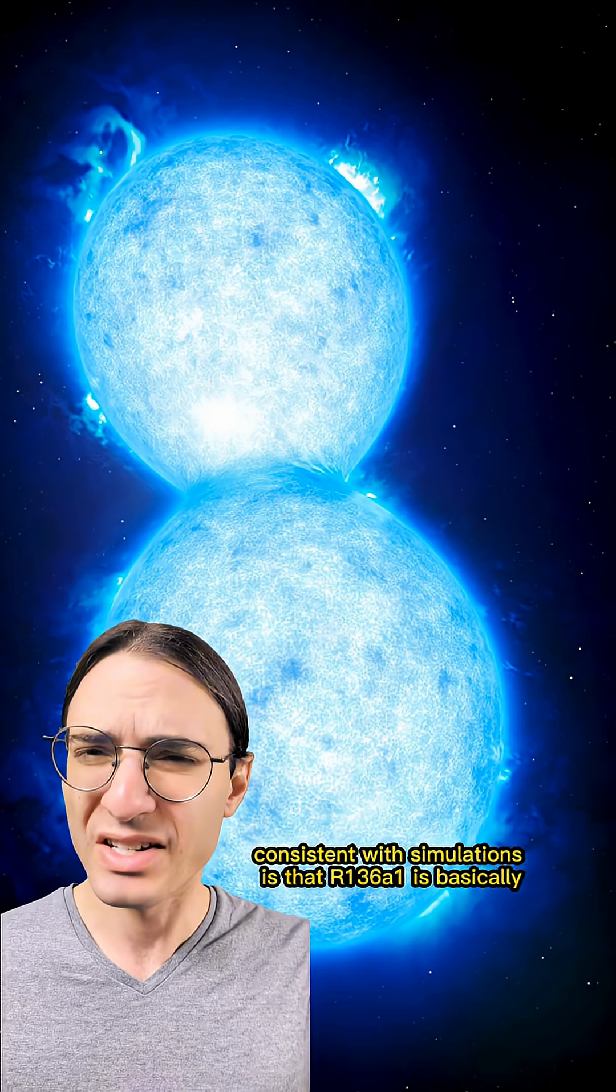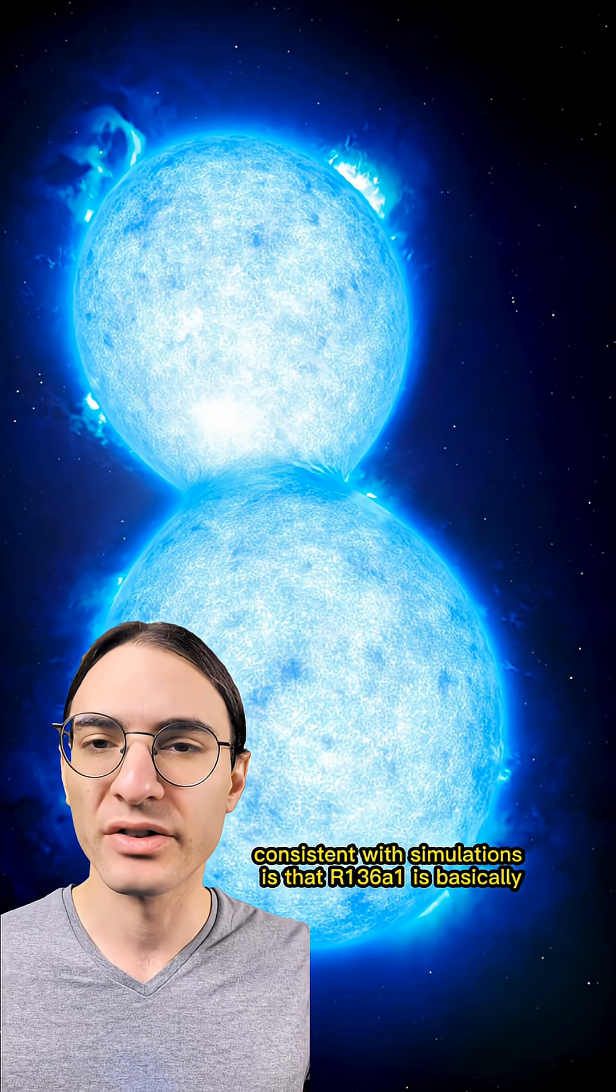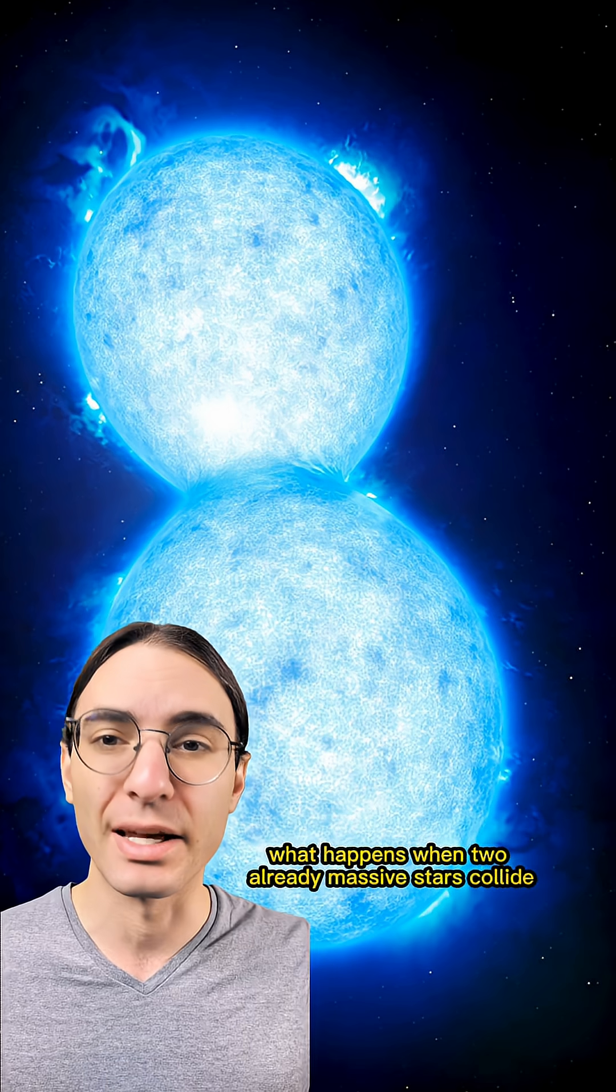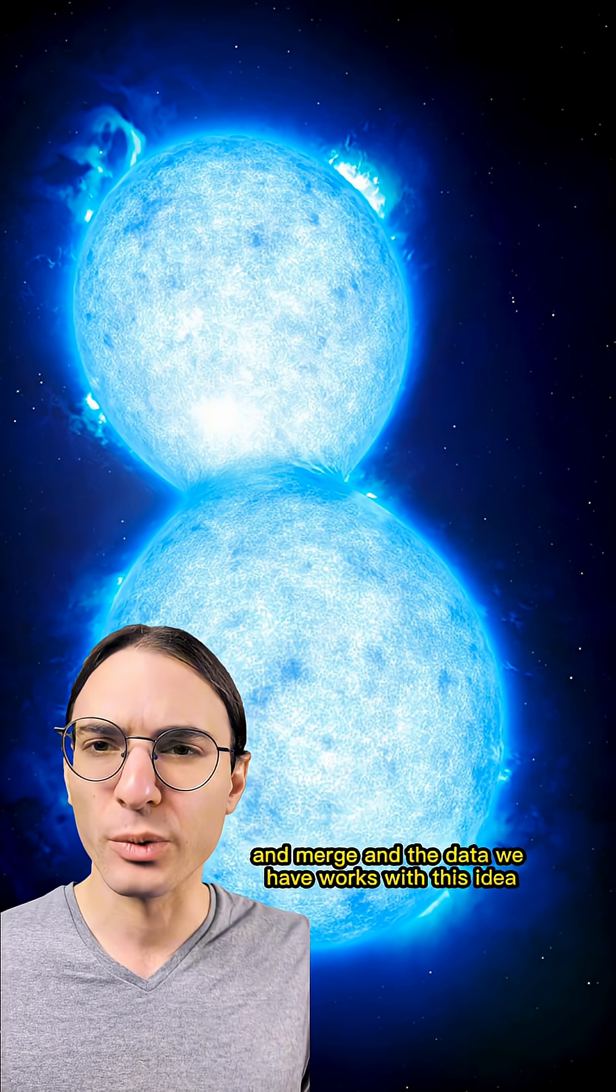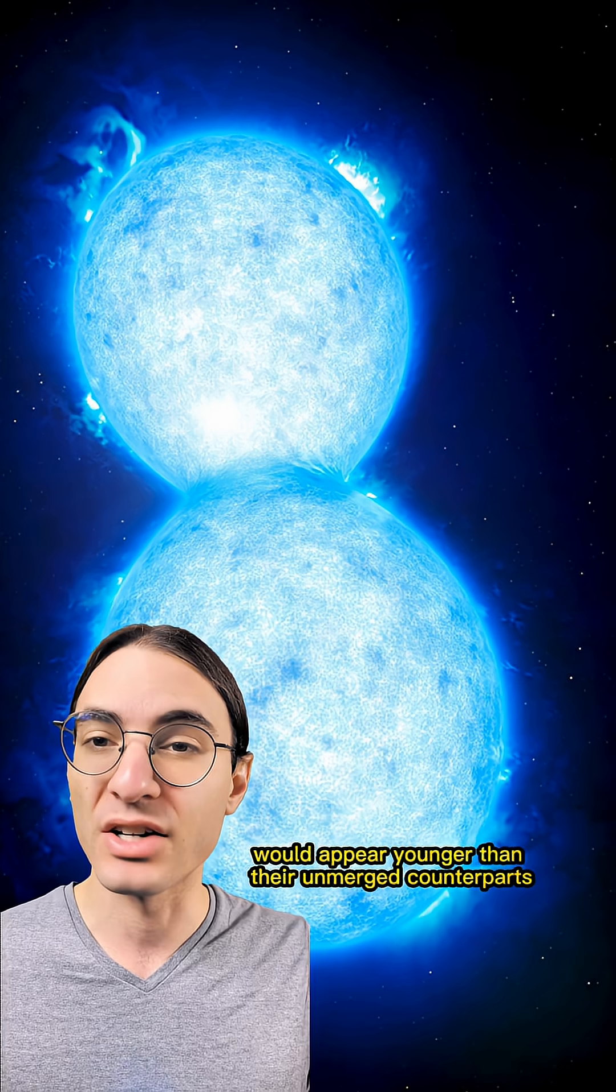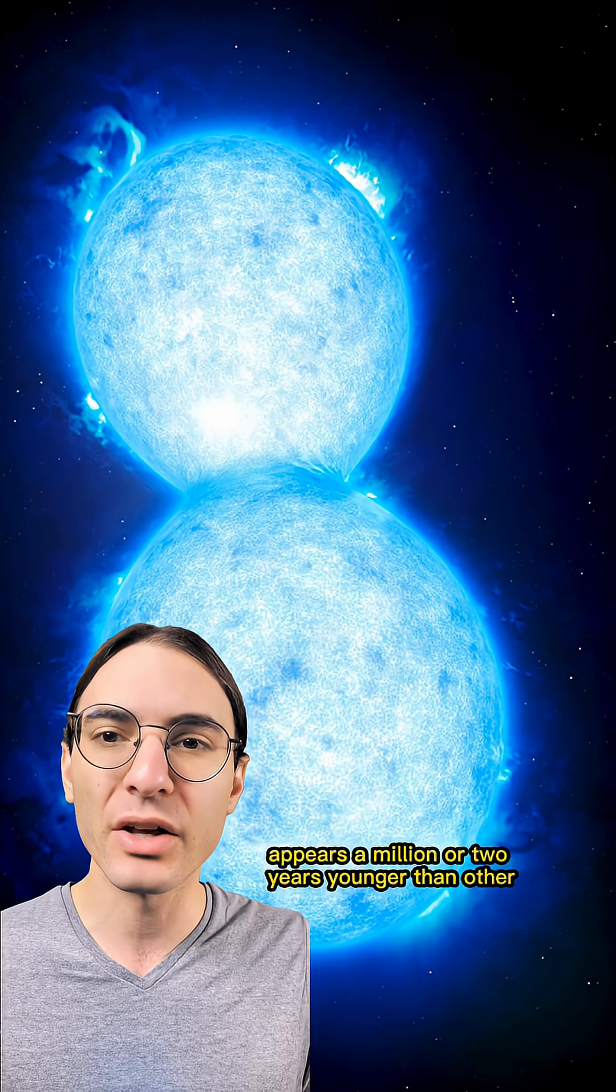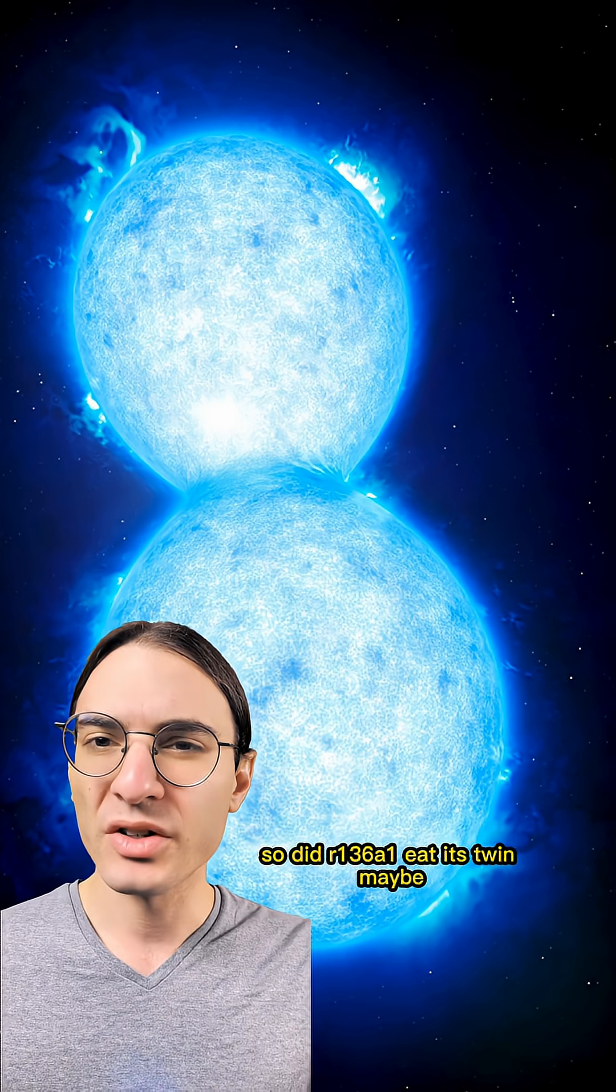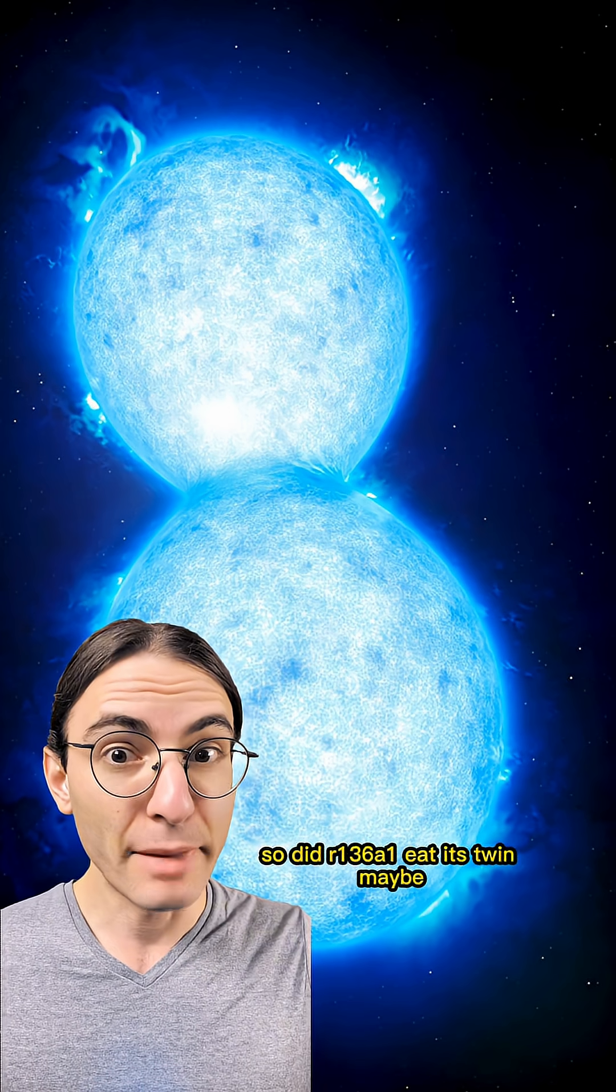So one possible explanation, consistent with simulations, is that R136A1 is basically what happens when two already-massive stars collide and merge. And the data we have works with this idea. Merged stars would appear younger than their unmerged counterparts, and R136A1 appears a million or two years younger than other nearby smaller stars. So, did R136A1 eat its twin? Maybe.